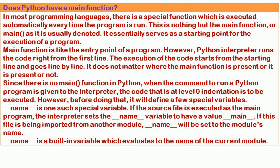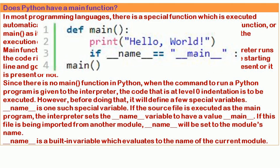Before doing that, the interpreter will define a few special variables. __name__ is one such special variable. If the source file is executed as the main program, the interpreter sets the __name__ variable to the value __main__. If this file is being imported from another module, __name__ will be set to the module's name. __name__ is a built-in variable which evaluates to the name of the current module.